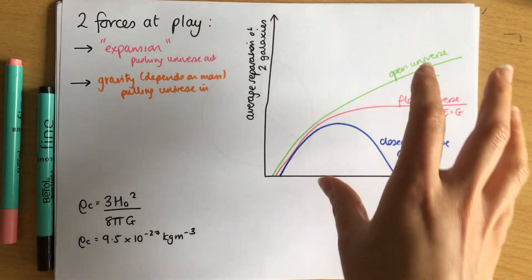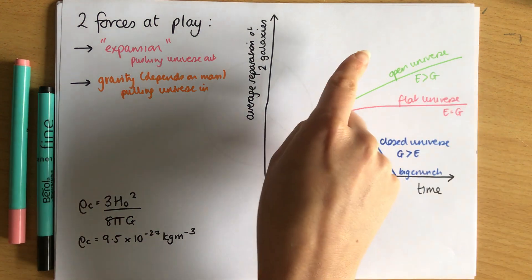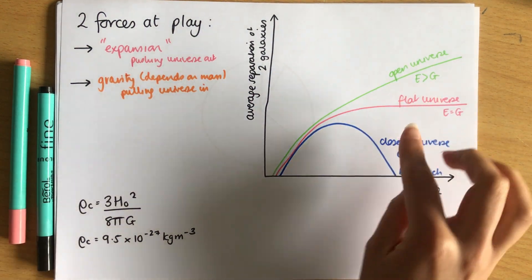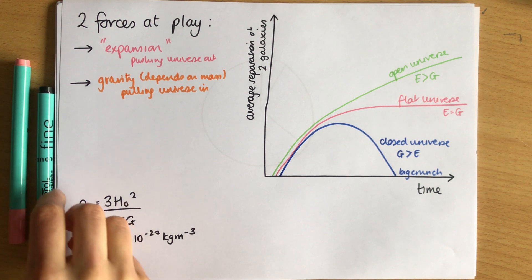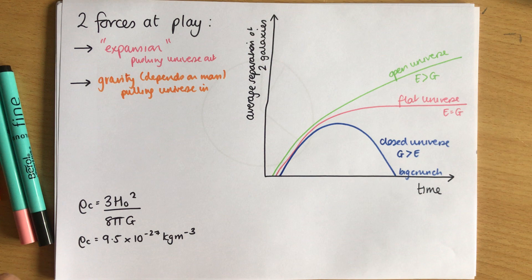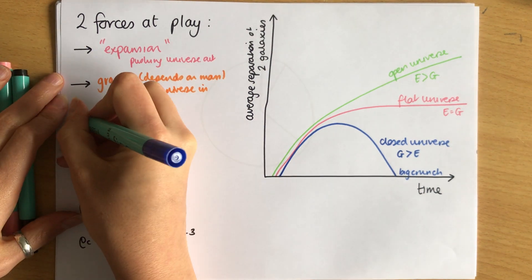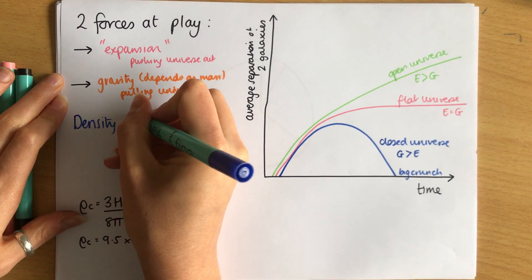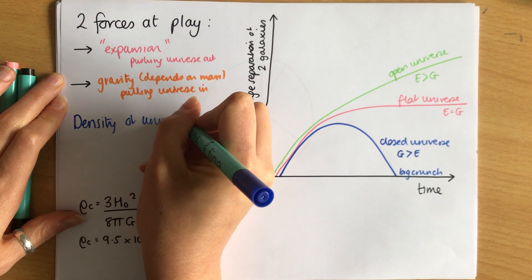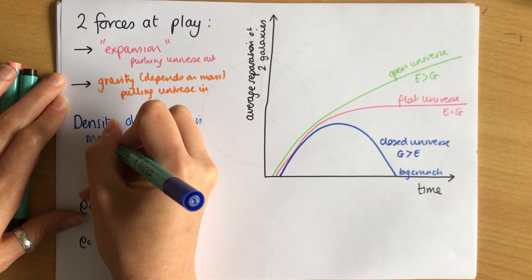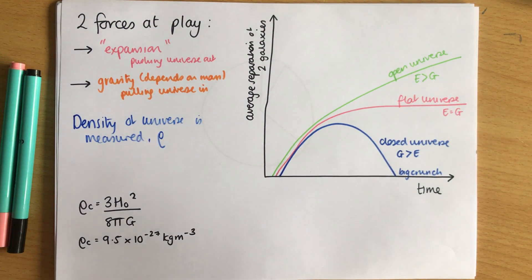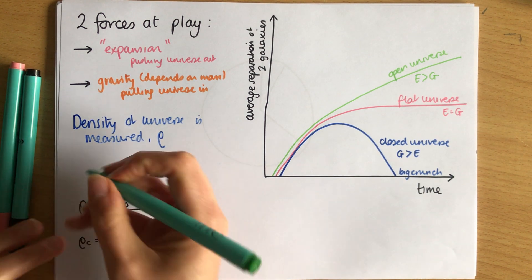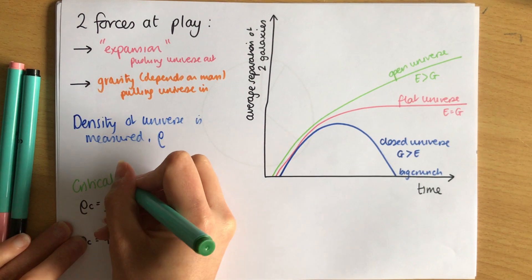What's going to happen to the universe depends on its mass: more mass gives a closed universe, less mass gives an open universe, and a critical mass gives a flat universe. Because mass is hard to measure directly, we instead measure density. There is something called the critical density of the universe.